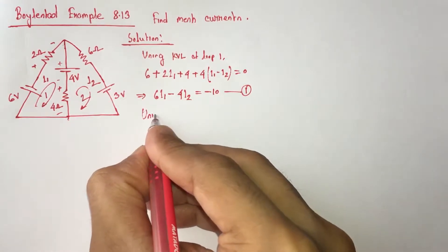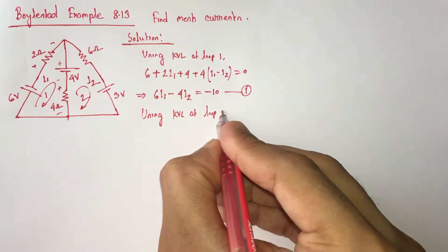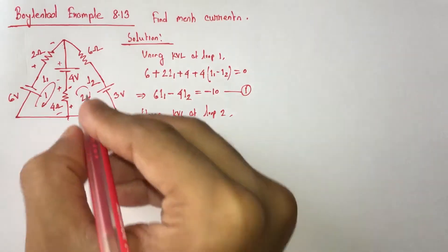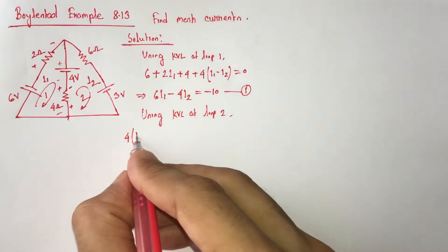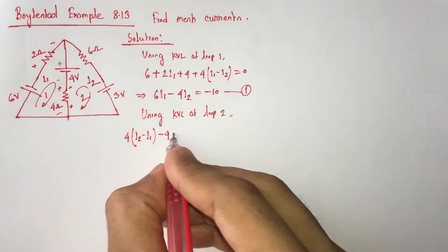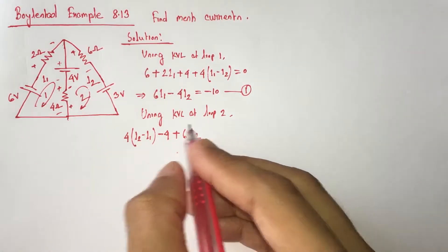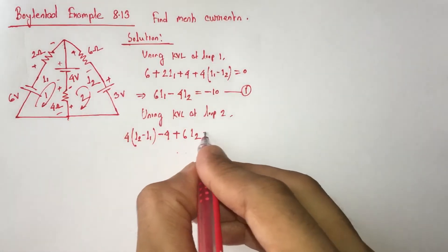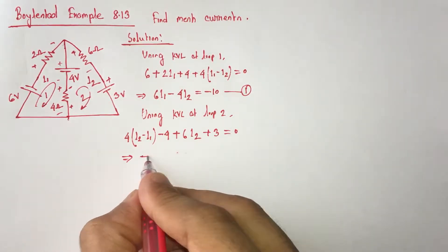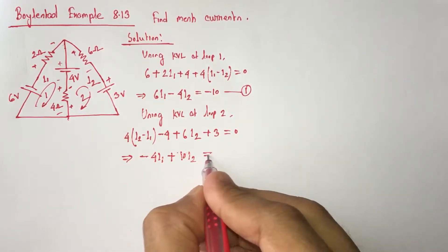Now, using KVL at loop 2, we will get: 4(I2 minus I1) minus 4 plus 6I2 plus 3 volts equals 0. Simplifying the equation, this becomes: minus 4I1 plus 10I2 equals 1. This is equation 2.